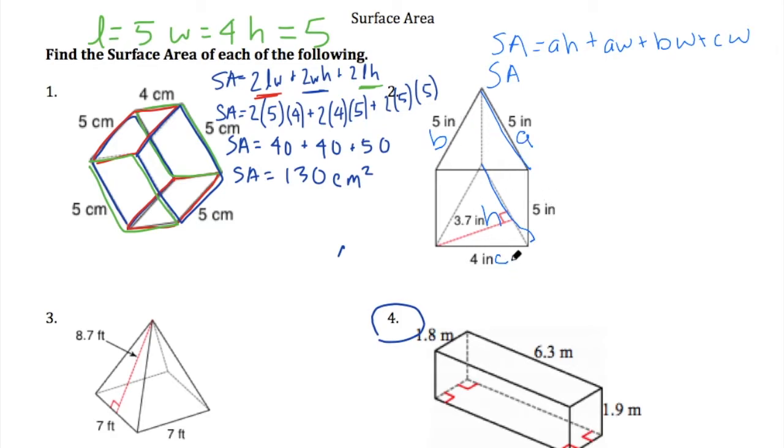We've got A, B, C. We label H there in the middle. The distance between the two triangles is W. Now it's time to plug things in. A is 5. H is 3.7. And then we're going to add 5 times W is 5. A lot of 5s here. Plus B is 5 times W is 5. Plus C is 4 times W is 5.